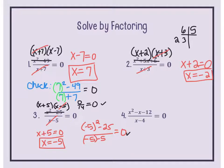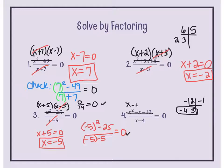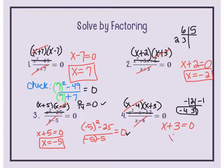For number 4, is the numerator factorable? I'm looking for factors of a·c whose sum is b — numbers that multiply to negative 12 but add to negative 1. Four and 3 give me 12, and one of them must be negative. To get negative 1, the 4 must be negative. So it factors to x minus 4 and x plus 3. The common factor x minus 4 divides out, leaving x plus 3 equals 0. Subtract 3: x equals negative 3. When plugged back in, it works. This is one way to solve by factoring.